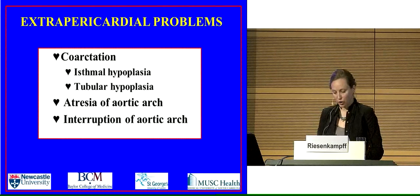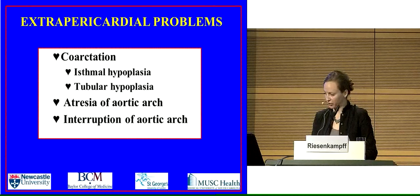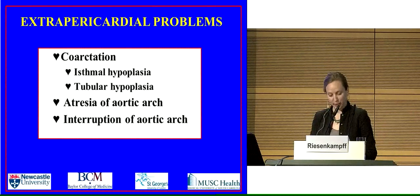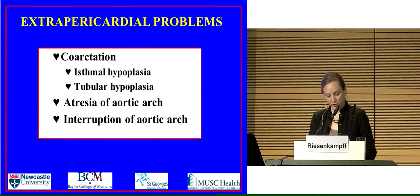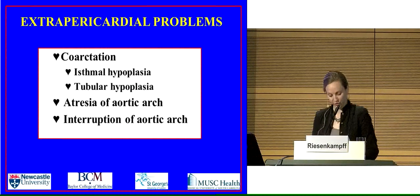Coarctation can be associated with isthmal hypoplasia, or the more uniform narrowing of the arch known as tubular hypoplasia. There is then a spectrum of malformation from tubular hypoplasia through atresia to interruption of the aortic arch. This can affect the different components of the arch, but in the interest of time we will only see images of the isthmus region.